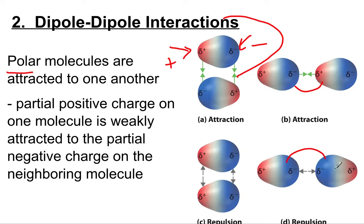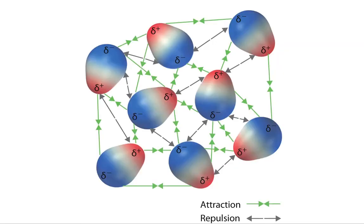So this guy might be forced to spin around or move around within the sample so that the opposite sides can be attracted to each other. A partial positive charge on one molecule is weakly attracted to the partial negative charge on the other neighboring molecule. We've got this positive and negative interaction here, and it's all due to the polarity that you already learned about.